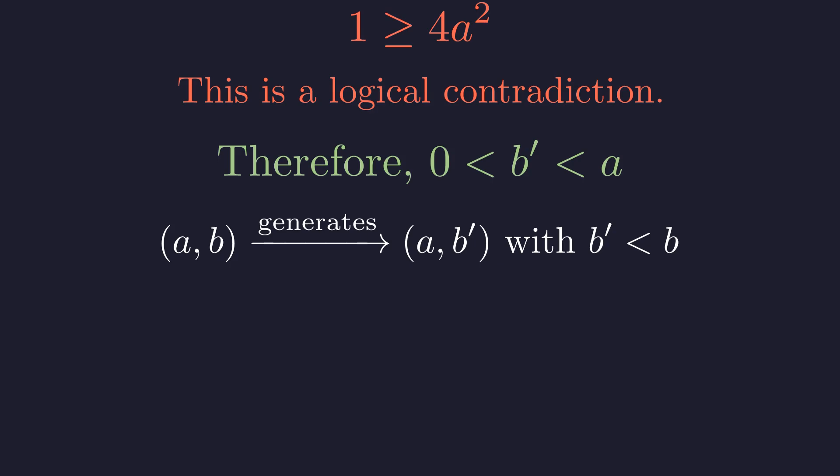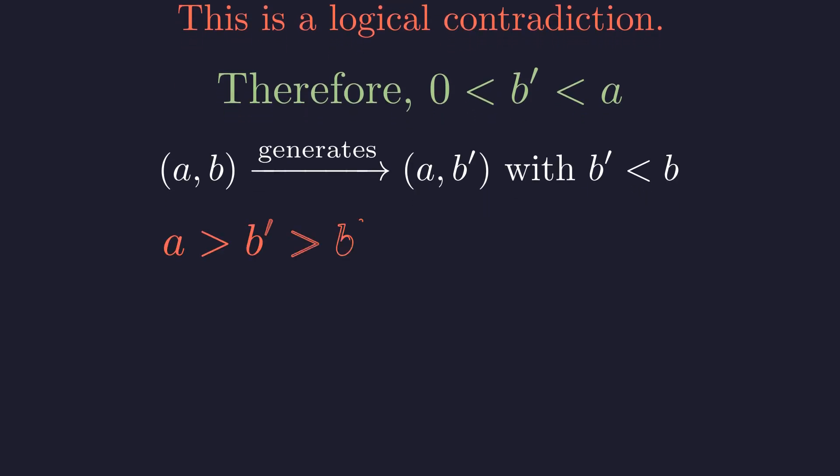This implies the existence of an infinite, strictly decreasing sequence of positive integers. Such a sequence cannot exist. The well-ordering principle states that any non-empty set of positive integers must have a least element. An infinite descending chain has no least element, which is a contradiction. Therefore, our initial assumption that M is positive must be false.